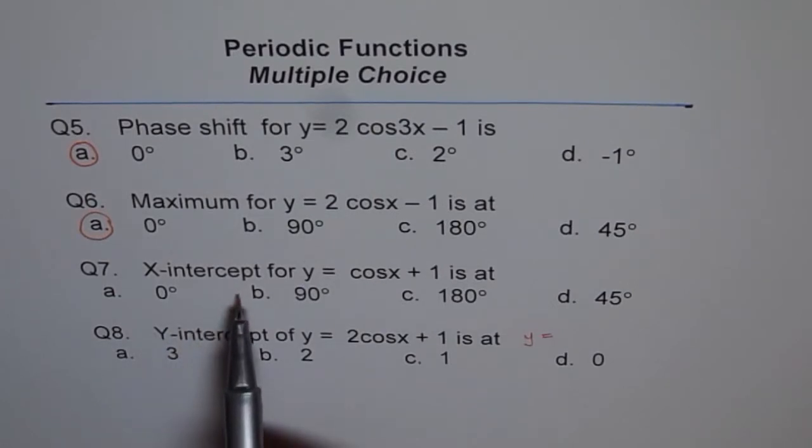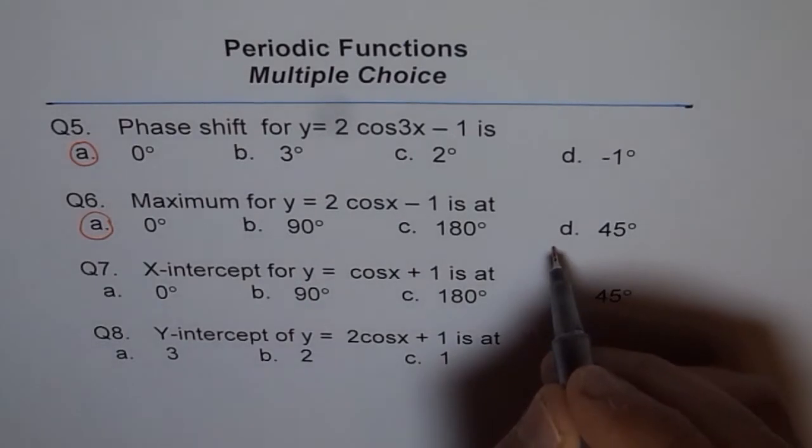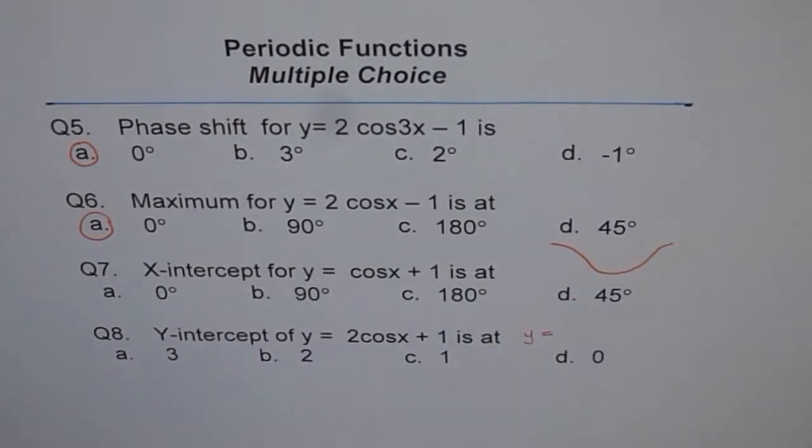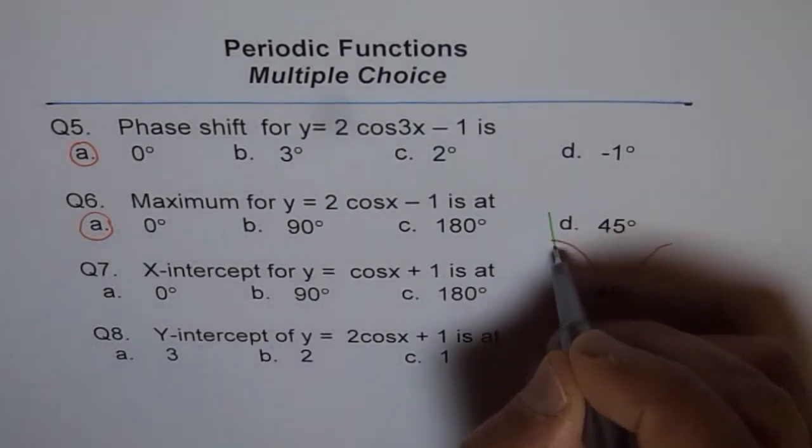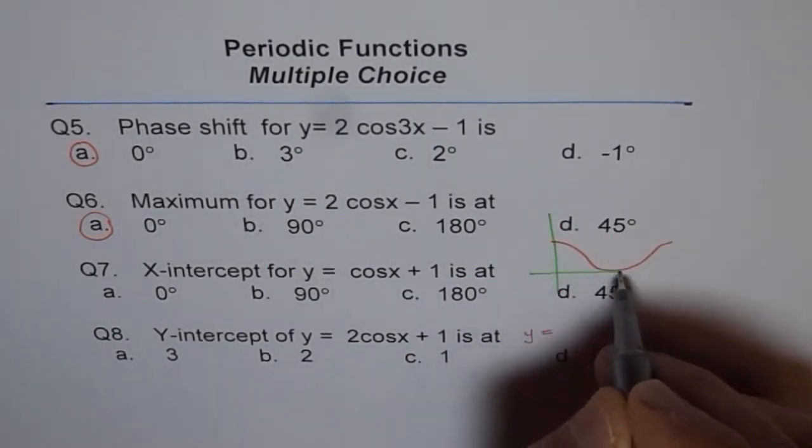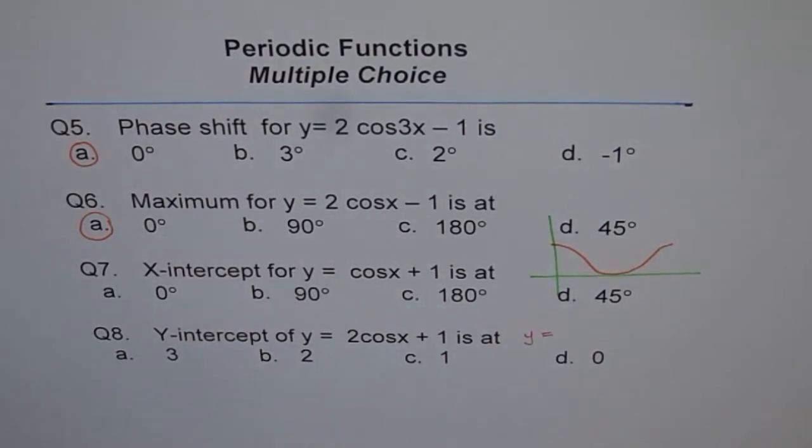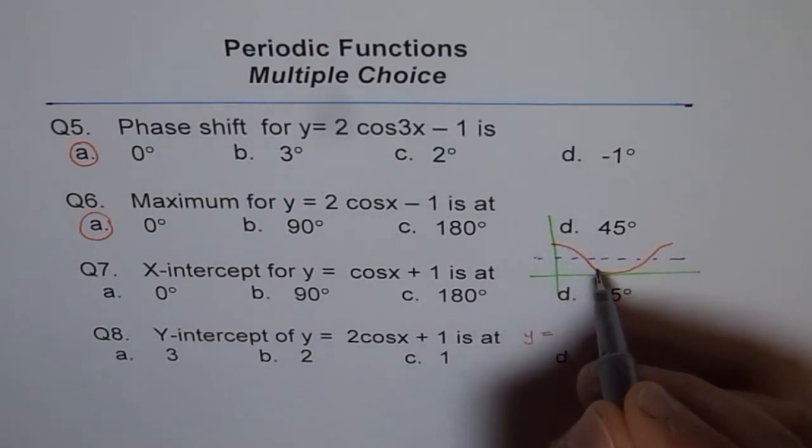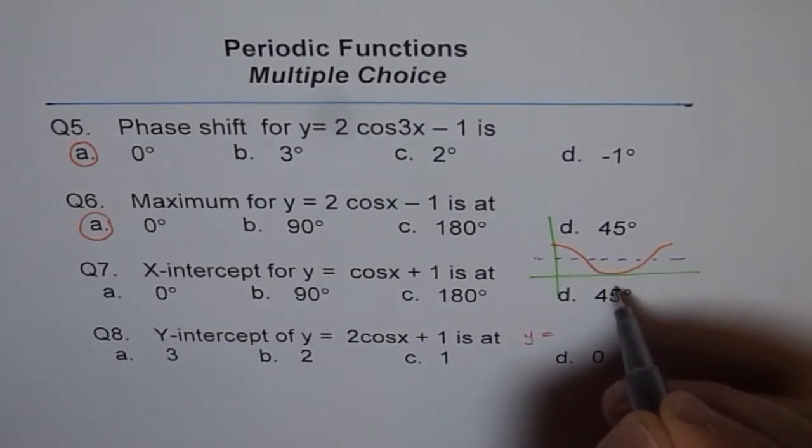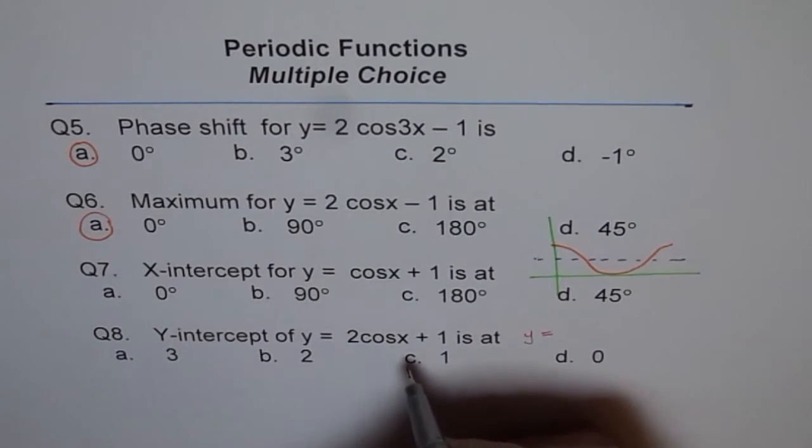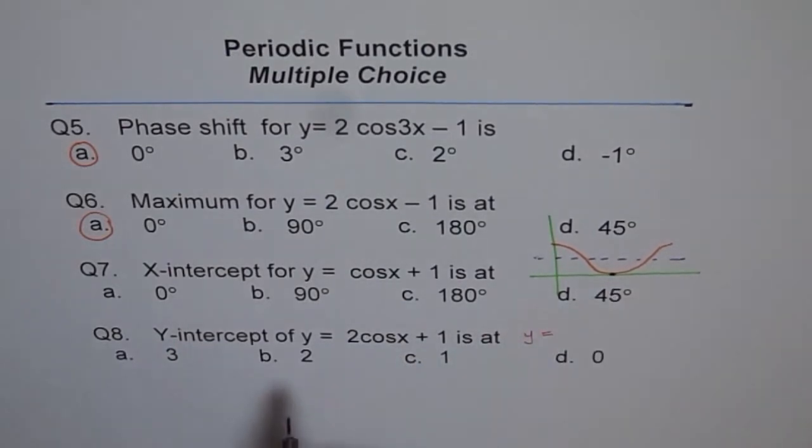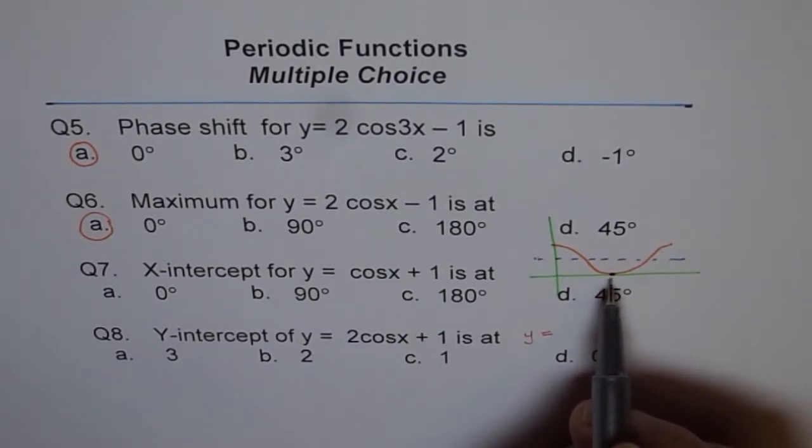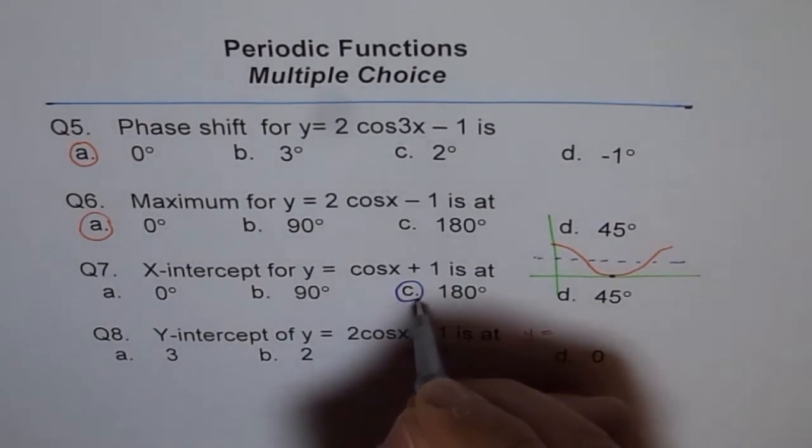X intercept for cos x plus 1 is at. So cos x plus 1 will be a function like this. So it is better to sketch and understand this function. So this function is going to be like this. So normally cos x is like this. But what really happened is that the function has moved up by one unit. Therefore it has only one x intercept. And that is at 180 degrees. Do you understand that part? So the answer is 180 degrees.